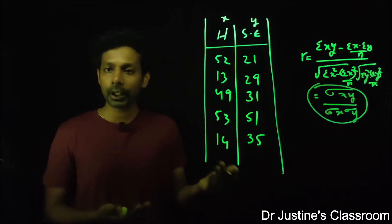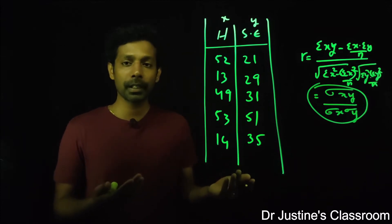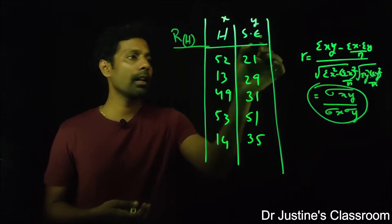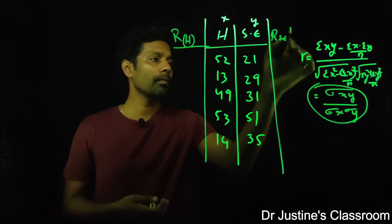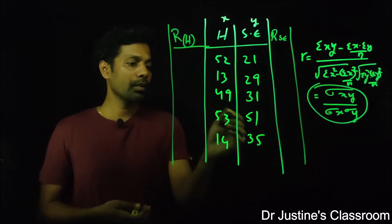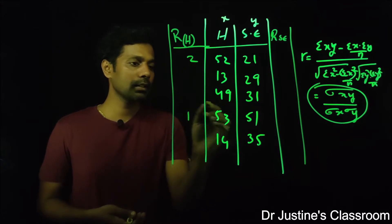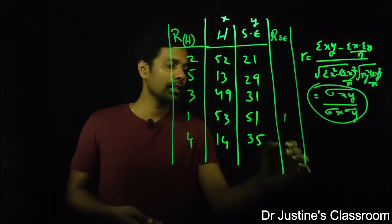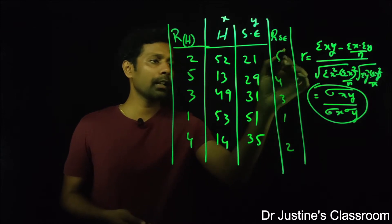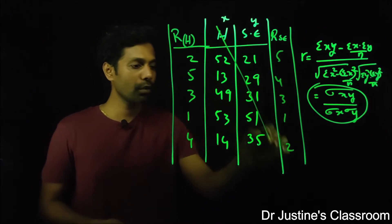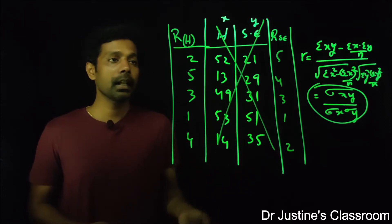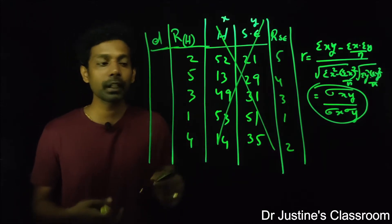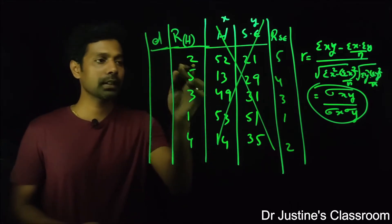In that case, we can use Spearman rank correlation instead. We convert the values to ranks — rank of happiness and rank of self-esteem — assigning first, second, third, fourth, fifth ranks and so on. Then, rather than using the original data, we calculate d, the difference between the two ranks.